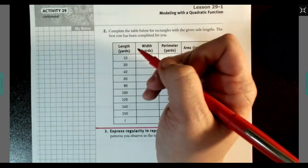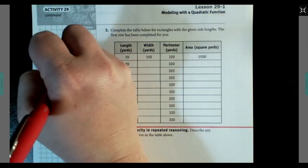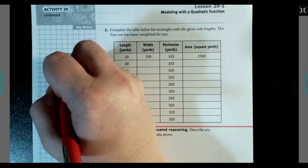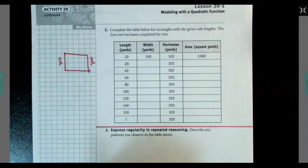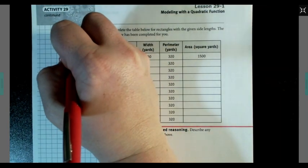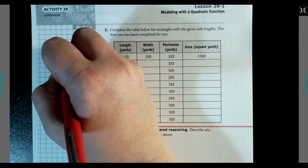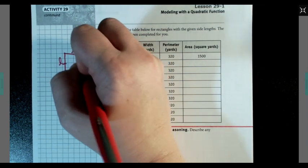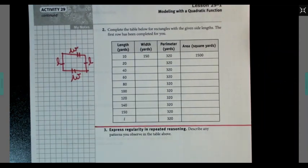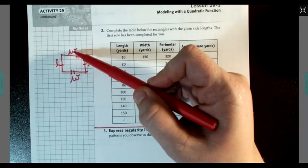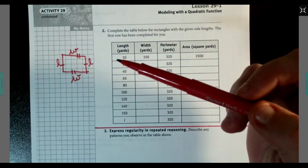Now you have to remember that we're dealing with a rectangle. So say that this is my length. This is also my length. These are equal to each other. This is my width. This is also my width. Because again, opposite sides are equal to each other.